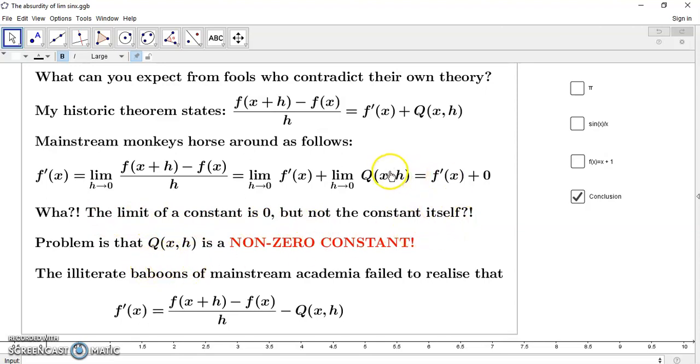So the limit of the constant of the left-hand side must be equal to the right-hand side. So they take the limit again of the derivative and of the difference. Now watch what they do here. They leave the derivative constant alone. In other words, the limit of the derivative is a derivative.